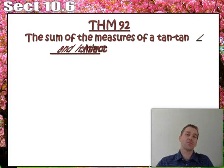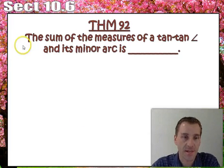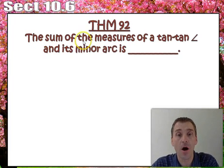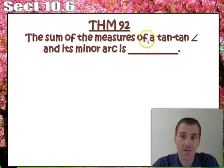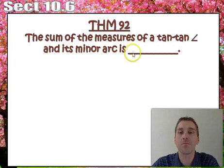Here's what you can do. Let's write the theorem now. It's theorem 92. I put a blank there for a reason, because this is the wording. It says, the sum of the measures of the tangent tangent angle and its minor arc is blank.